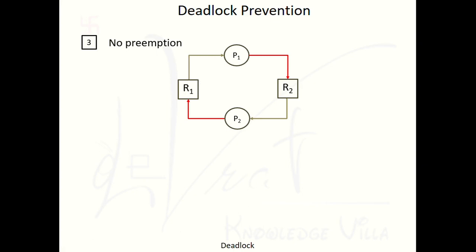Process P2 is holding resource R2 and making a request for resource R1. As per the definition of deadlock, both processes are holding one resource and requesting another. Whatever resources P1 and P2 are requesting are already held by the other process, so they are not getting those resources. If any one process releases the resource, then the other process can get it — but right now we are not able to solve the deadlock condition.